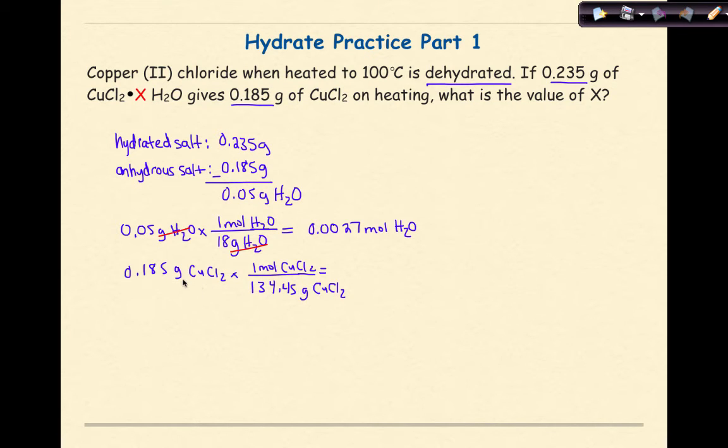Again, I'm going to cancel my units, so grams of CuCl2 cancels grams of CuCl2. So if I multiply 0.185 times 1 divided by 134.45, I find that I have about 0.0014 moles of CuCl2.